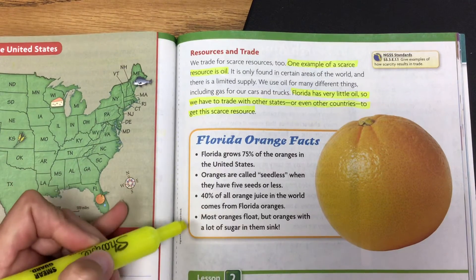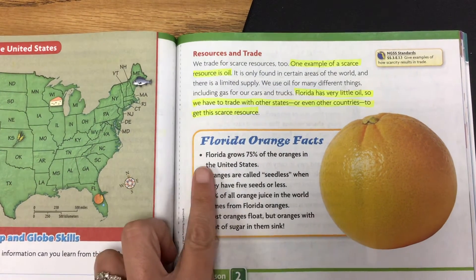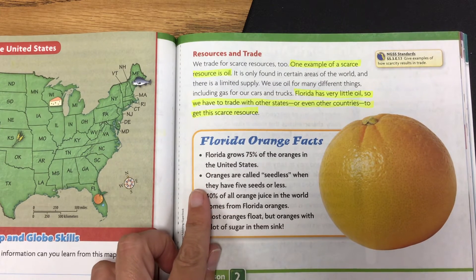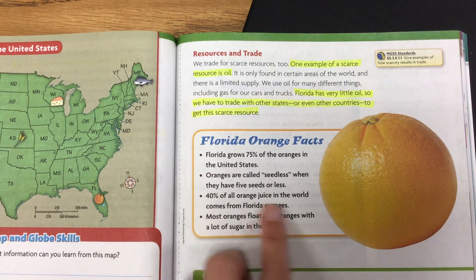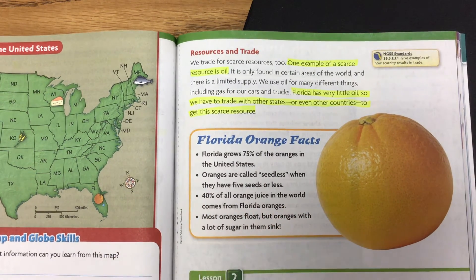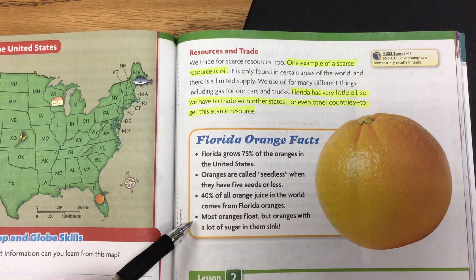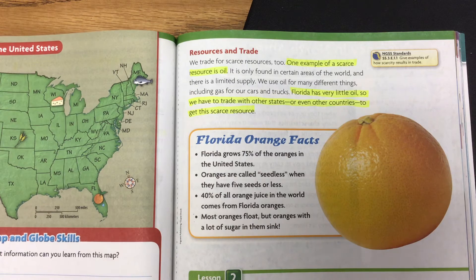Let's read these Florida orange facts. Florida grows 75% of the oranges in the United States. Oranges are called seedless when they have five seeds or less. Forty percent of all orange juice in the world comes from Florida oranges. Most oranges float, but oranges with a lot of sugar in them sink.